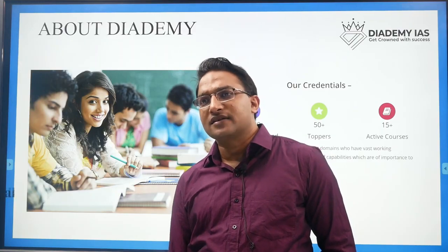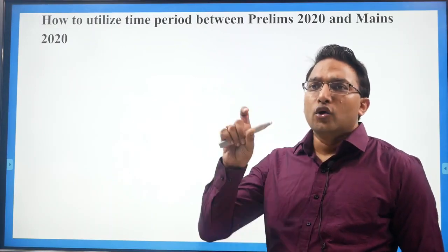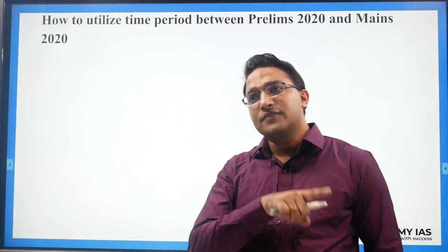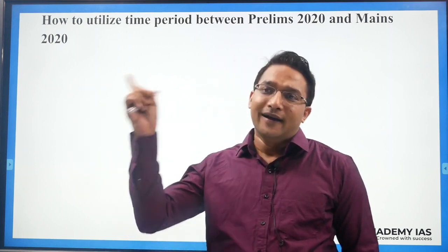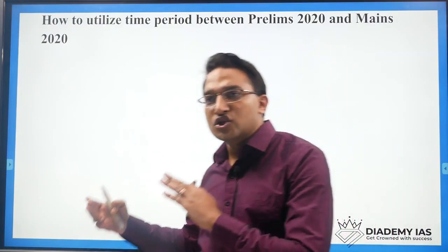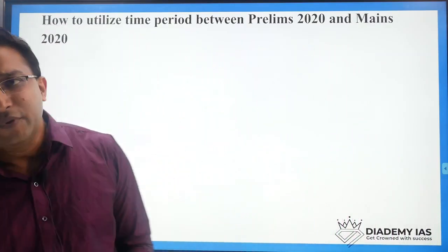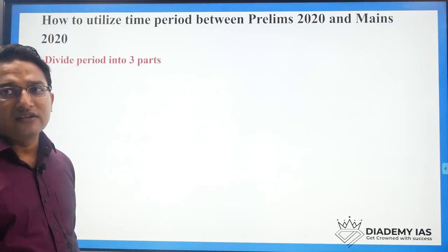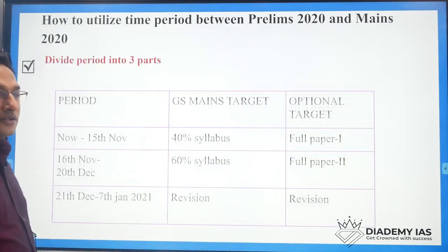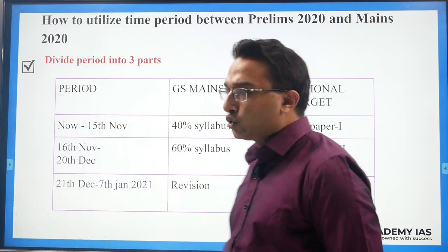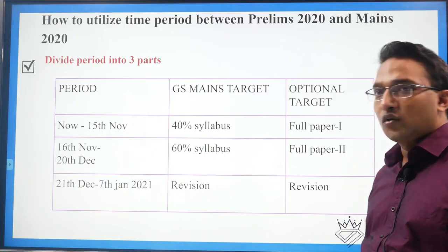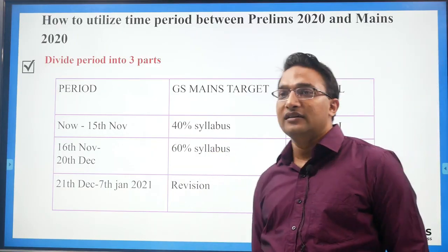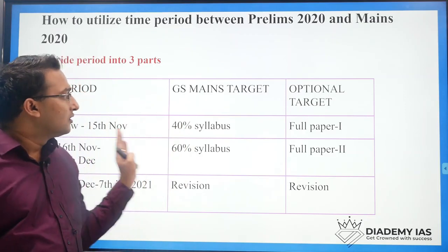In the last session I discussed how to prepare for GS mains and how to utilize the time between prelims and mains 2020. In that context, the time period should be divided into three categories: from now until the prelims result, then from 16th November to 20th December, and the last phase for complete revision.